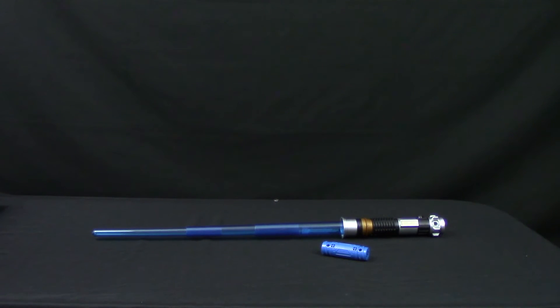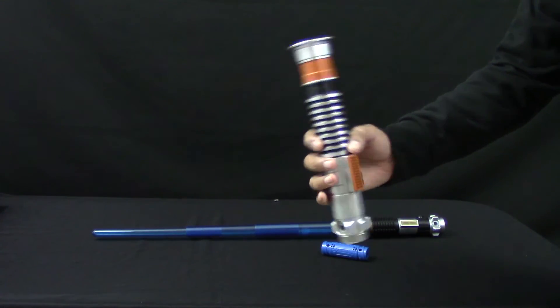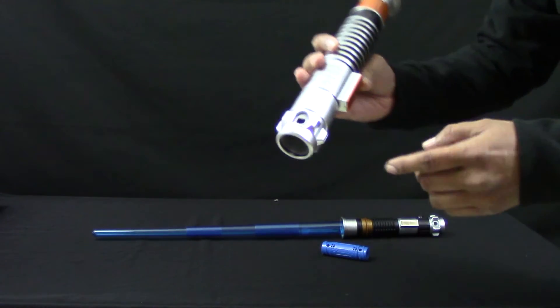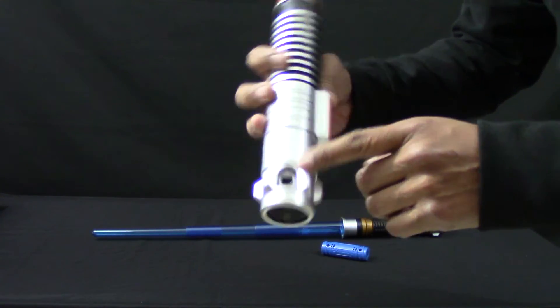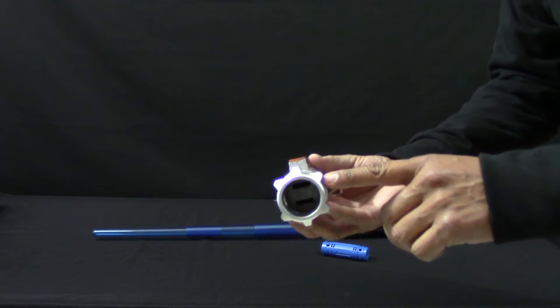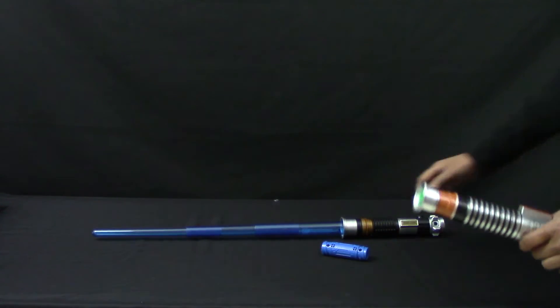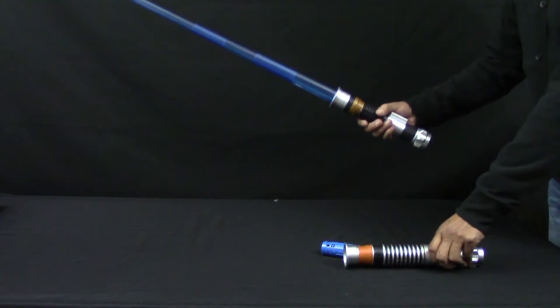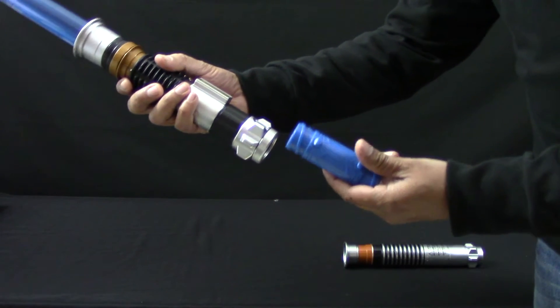We are going to show you how to use your Blade Builder's adapter. For this, we have here this other lightsaber that is not included. It's only to show you how it works. It has this hole for placing the Blade Builder's adapter as our Obi-Wan Kenobi's lightsaber. Now, we are going to join our adapter on this way.